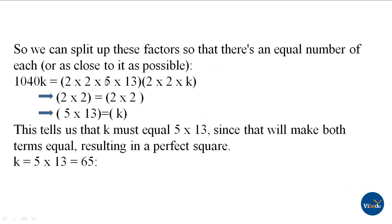Now, we can split up these factors so that there's an equal number of each. That means, here, we have (2 × 2) = (2 × 2), making both terms equal, which results in a perfect square.